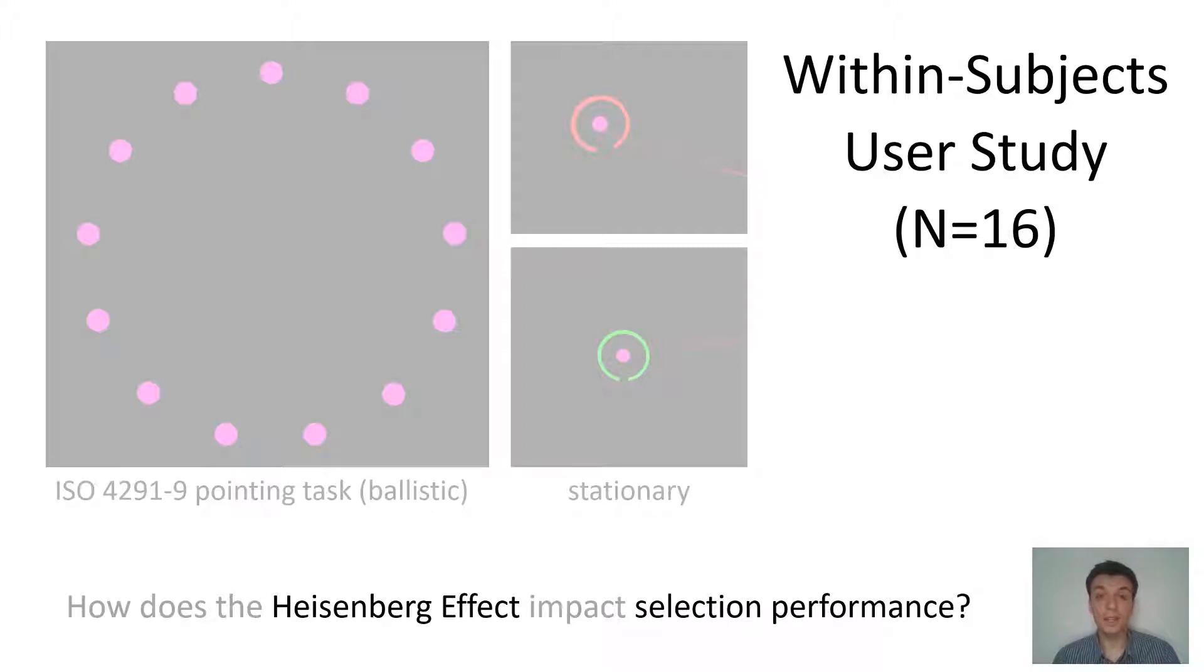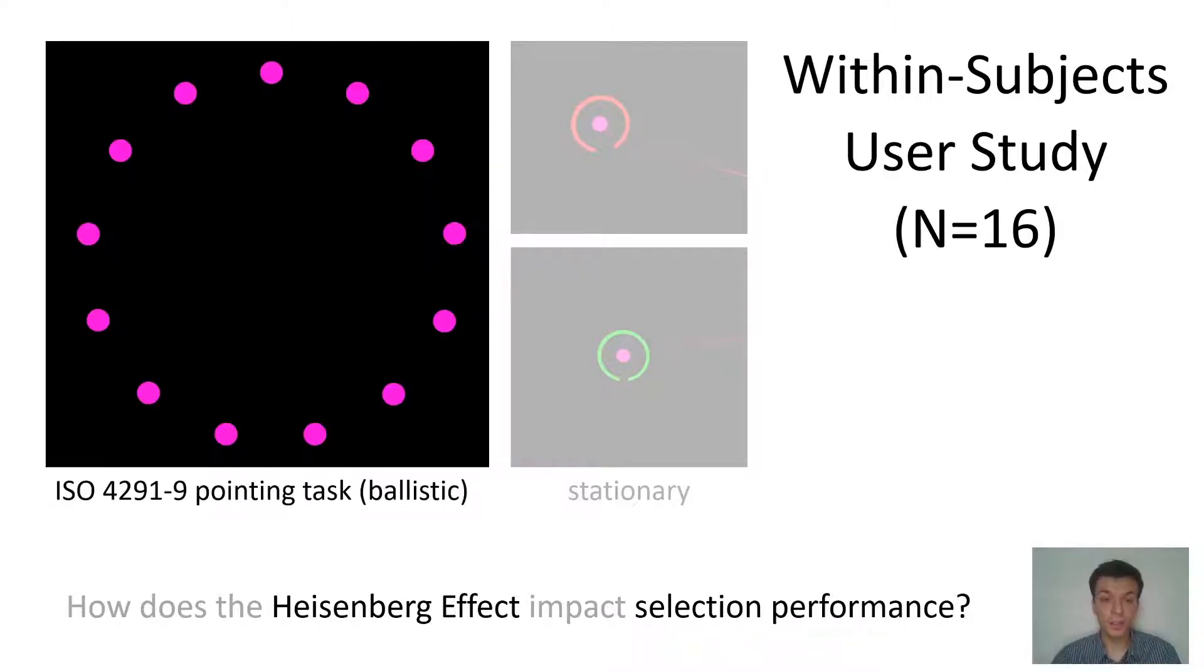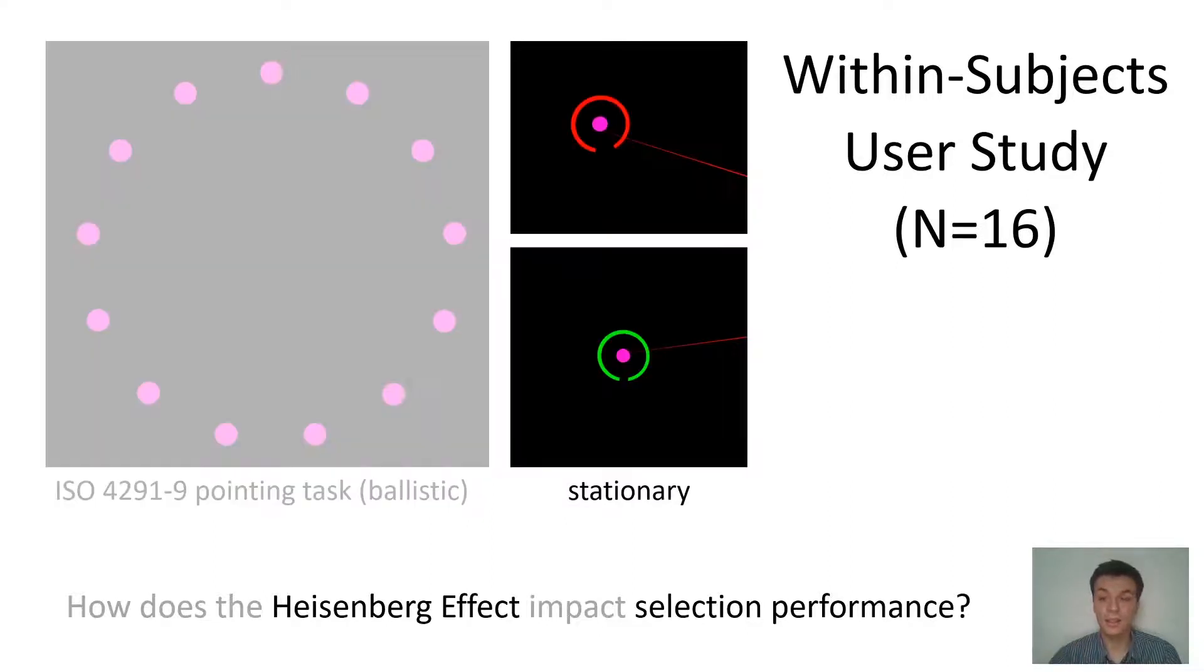We were very interested in finding out how this Heisenberg effect impacts the selection performance. To this end, we conducted a within-subject user study with 16 participants and we gave them two tasks. The first task is a standard pointing task or what we call the ballistic task where participants have to select disks that are shown at 8 meters in front of them. Additionally, to collect data on the hand jitter and the pure displacement of the selection when pressing the button, we collected the so-called stationary data. Participants were asked to stay within the target after their ballistic click until the indicator turned green and then perform another click. This way we could collect their hand jitter during the timeout and get the raw displacement of the button press.